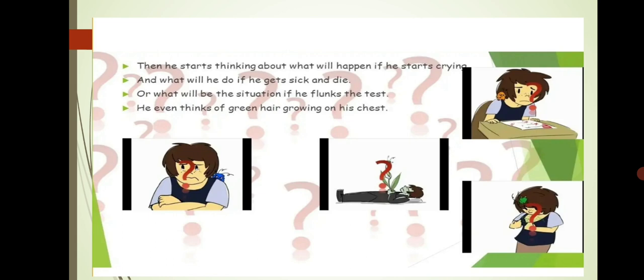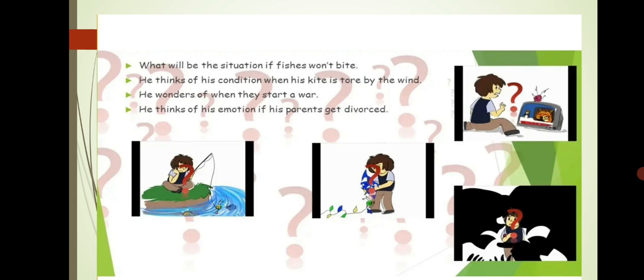Now, what will be the situation if the fish won't bite? This child is trying to sit at the water source and trying to get the fish. Sometimes the child may also have a fish tank at home, and there's a pet fish that is generally playing with the kid. But if one day it happens that the fish will stop biting, then what will happen? This is the worry of this little child. He thinks of his condition when his kite is torn by the wind. The child really likes to play with kites and he is worried, what will happen if the kite is torn by the wind?